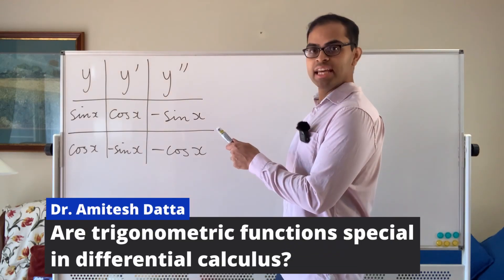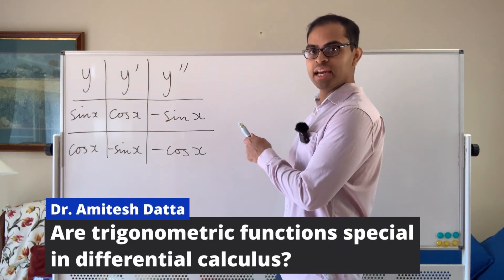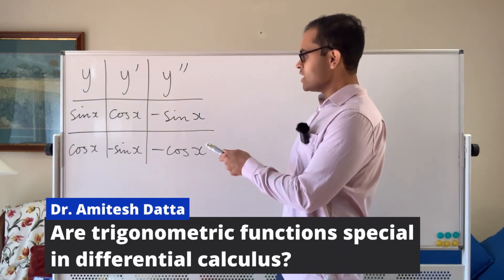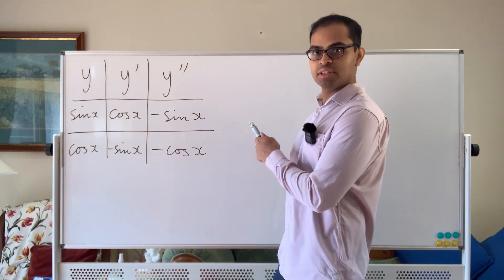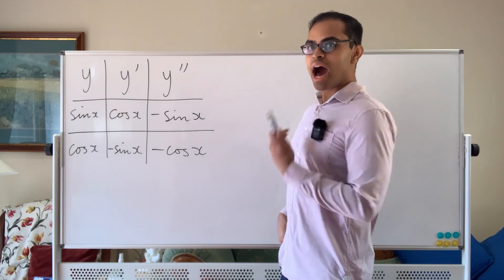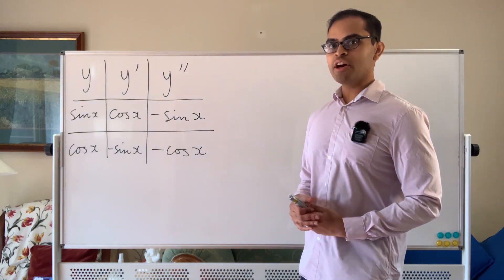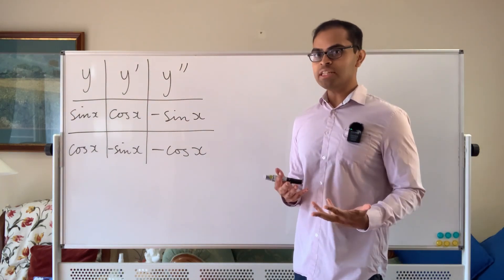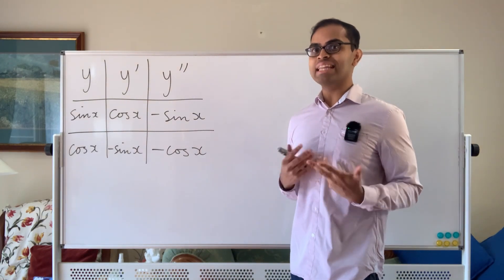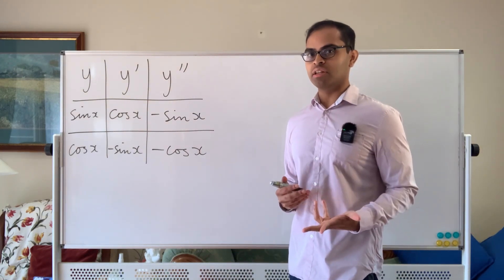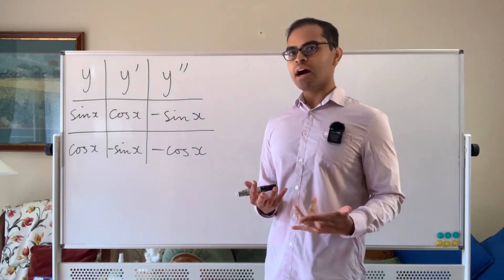The second derivative of sine x is negative sine x, and the second derivative of cosine x is negative cosine x. Are there non-trig functions with the property that their second derivative is equal to negative of the function? Well, let's find out.